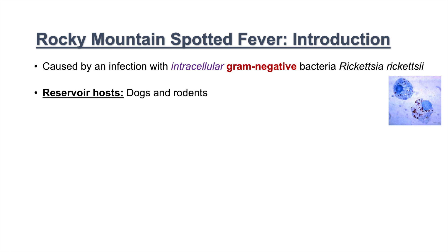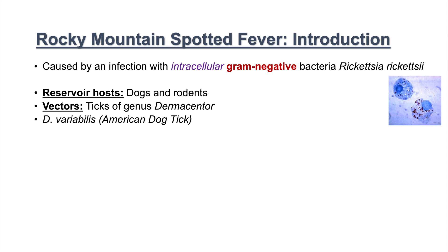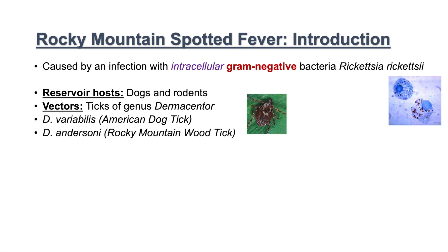The reservoir hosts for this bacteria are generally dogs and rodents. The vectors for transmission are ticks of the genus Dermacenter. Two important species largely responsible for Rocky Mountain Spotted Fever in the United States are Dermacenter variabilis, the American dog tick, and Dermacenter andersoni, the Rocky Mountain wood tick. Other tick species are found in other geographical areas.